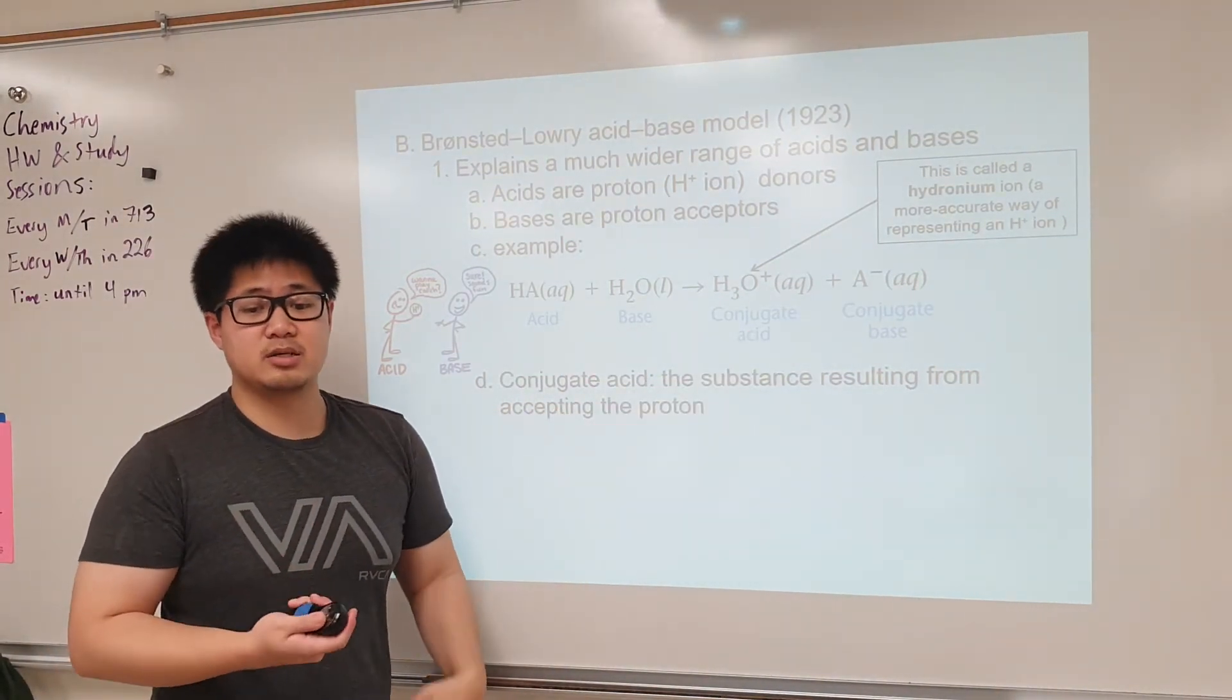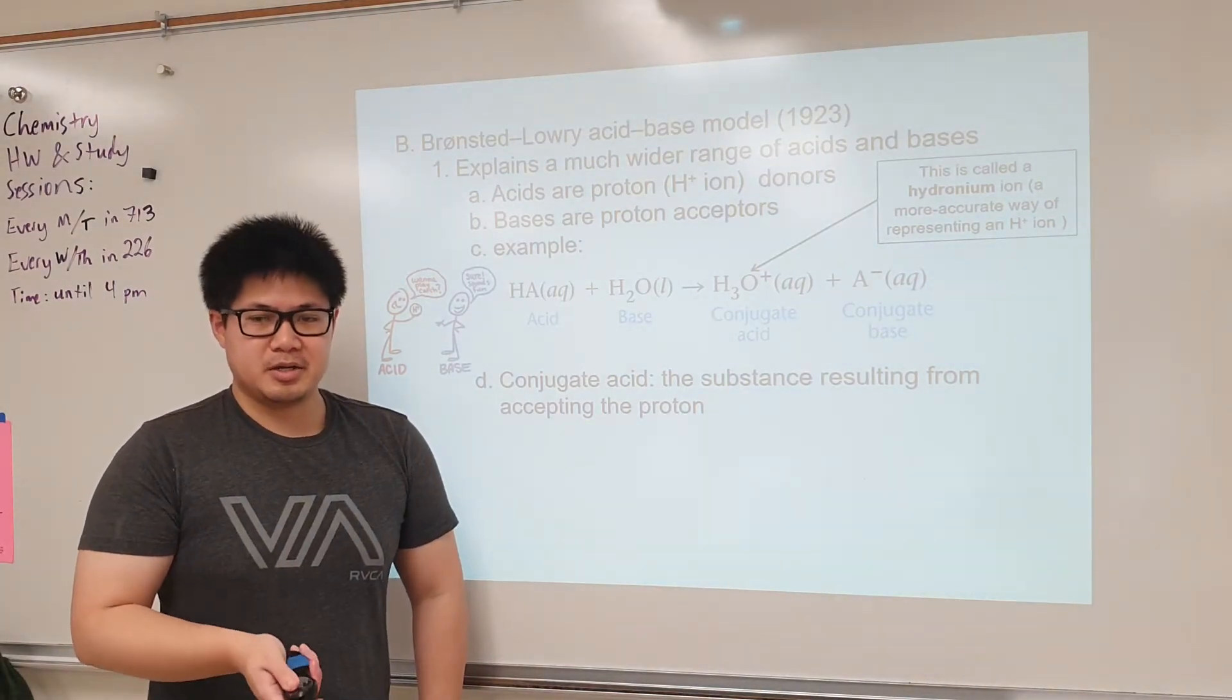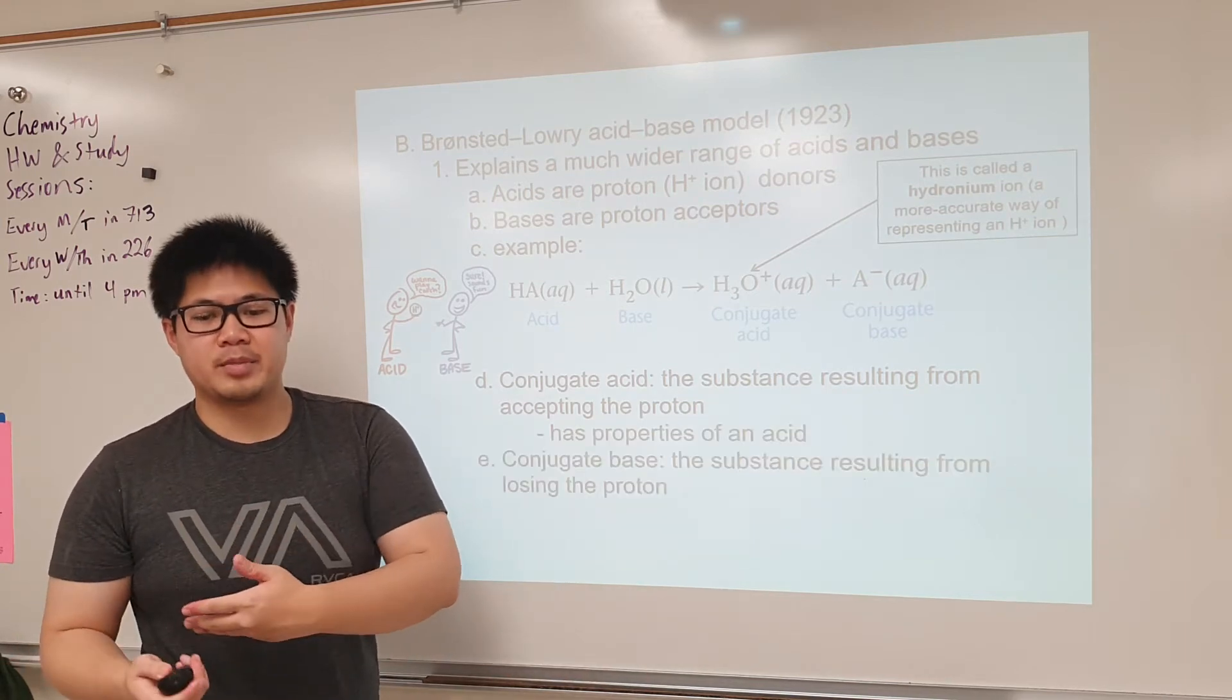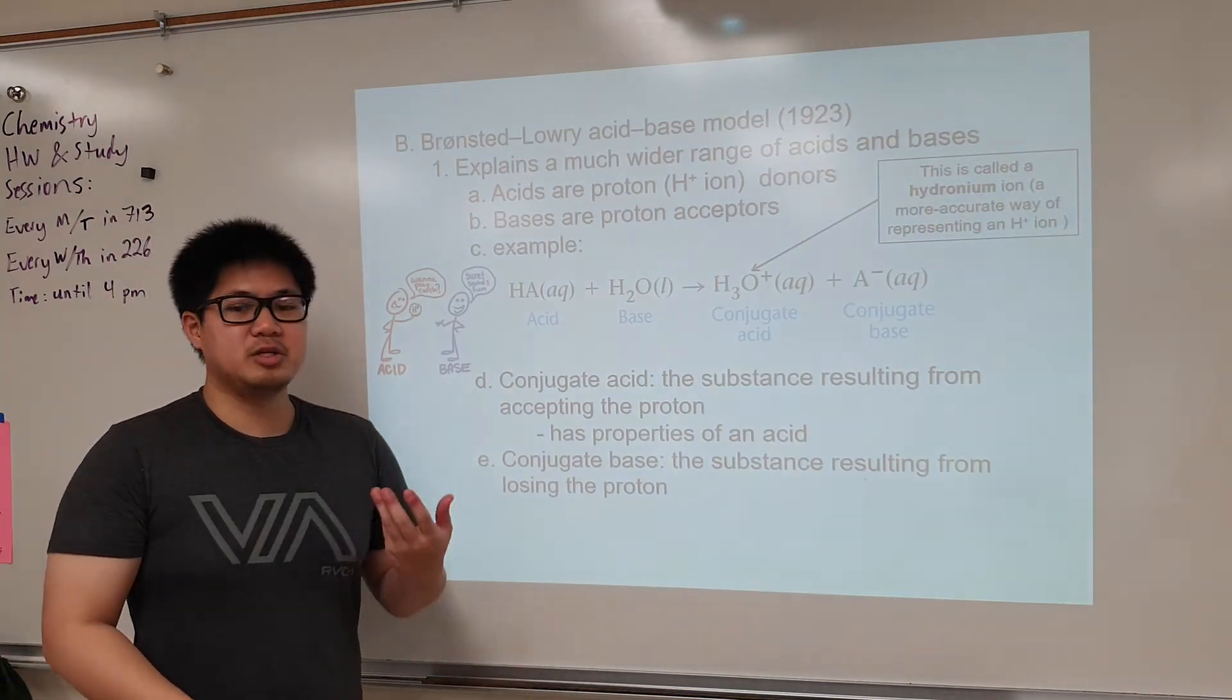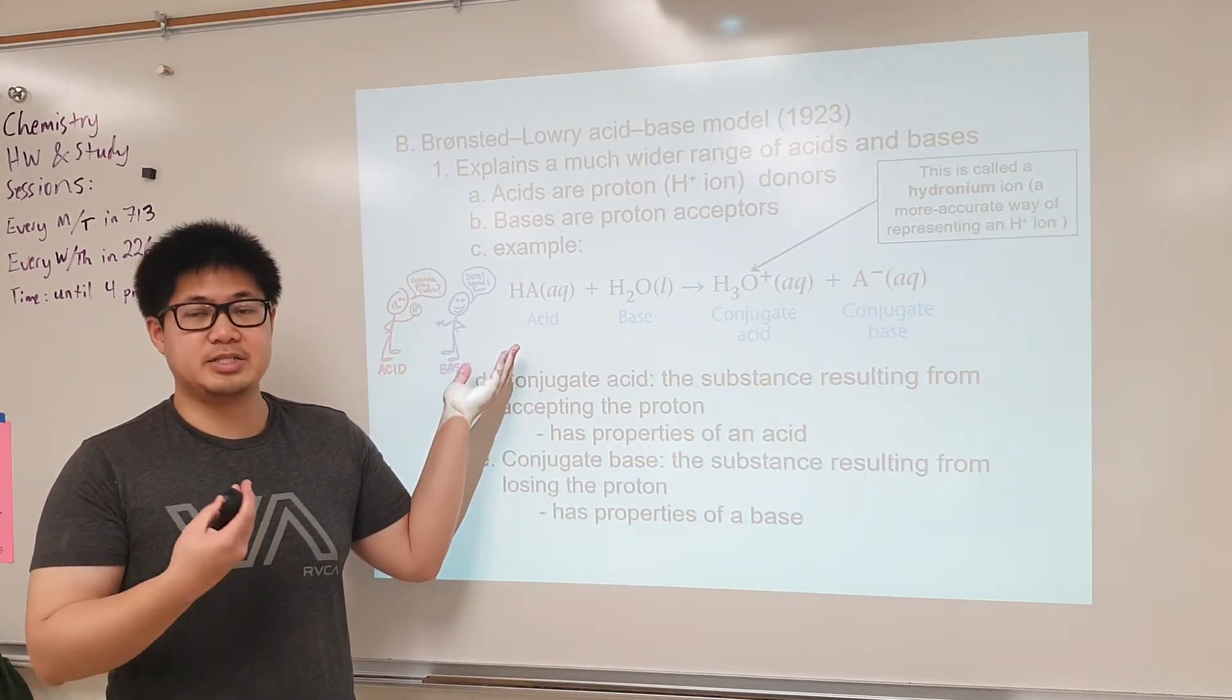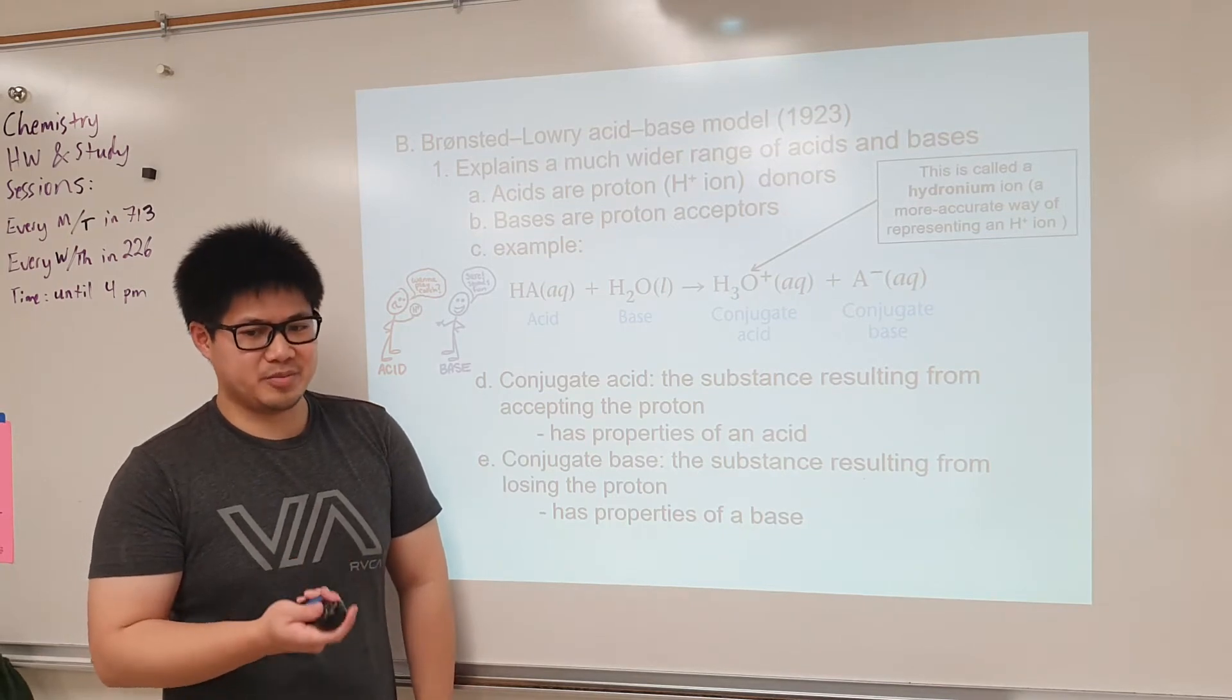Let's take a look at the definitions in blue. Conjugate acids are the substances that result from a base accepting a proton. Before the reaction, it was a base, and after it accepted the proton, it's now called a conjugate acid. What is a conjugate base? This was the substance that resulted from losing the proton. Before we had an acid, then after this acid donated its proton, it became a conjugate base.